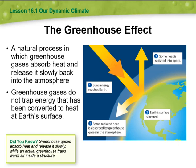Greenhouse gases absorb energy that has been converted to heat at Earth's surface. As you can see here from the figure, sun energy reaches the Earth, Earth's surface is heated, then some of the heat is radiated back into space, and some of that radiated heat is absorbed by greenhouse gases in the atmosphere.